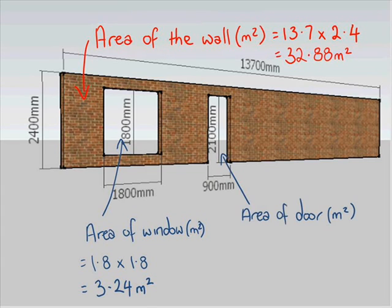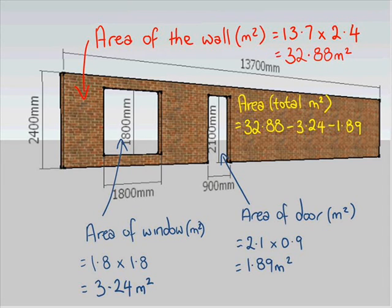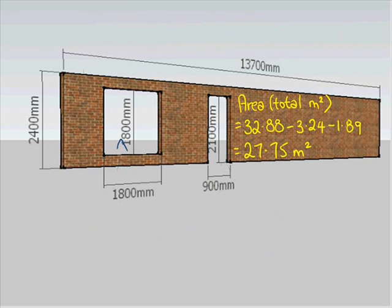Next we're going to work out the area of the door, another area which we're going to have to get rid of. This is going to be 2.1 by 0.9 metres, the answer to this which is 1.89 metres squared. So this is another area we're going to have to get rid of. All up, the area in total is going to be the area of the wall take away the area of the window and the area of the door, which is 32.88 take away 3.24 take away 1.89, which leaves us with 27.75 metres squared. So the area of the brick part of the wall is just under 28 metres squared.